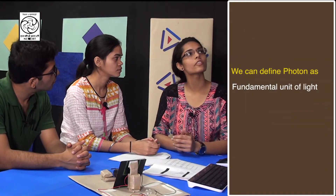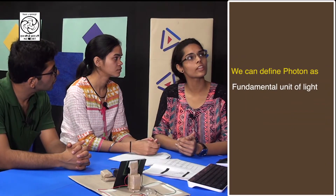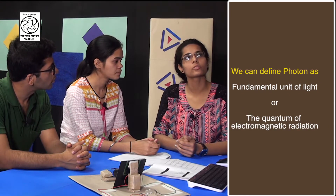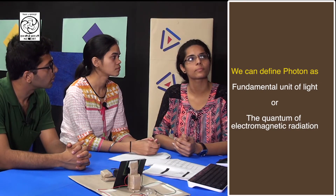First, you tell me, what do you understand by solar energy? Sir, energy we get from the sun is solar energy. Correct. Now, can anyone of you define photons? Sir, I know. Photons are the fundamental unit of light. We can also define them as quantum of electromagnetic radiation. Correct. And the sun rays are composed of photons of different energies.